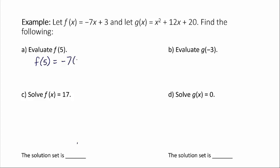So we're going to have -7 times 5, right, because that's where the x was, plus 3. So let's simplify this. -7 times 5 is equal to -35, and then we're adding 3. -35 plus 3 is -32.